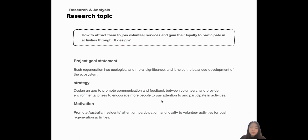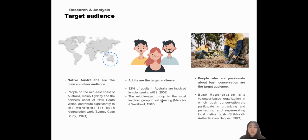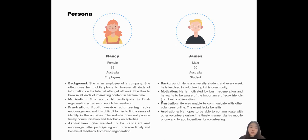Australians and those involved in jungle conservation in Southeast Asia are the main volunteer targets. Nassie helps to communicate with other volunteers online and get feedback from bush regeneration. James believes that bush regeneration activities can increase environmental awareness and wants an application to easily access detailed information.